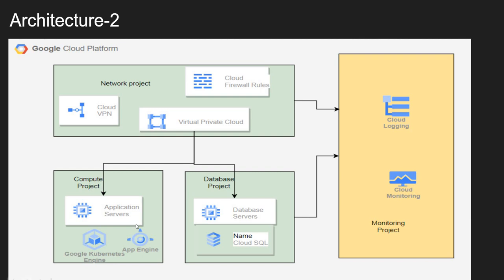Then I am creating one more project — a compute project — where I create all compute resources like my application servers, my GKE, or my App Engine, and I am sharing the VPC created in the network project. I am not creating any VPC in my compute project; I am just using the VPC from the network project because that is a shared VPC, shared across multiple service projects. Similarly for database, I create a separate project for database with VMs, Spanner, or Cloud SQL instances, and one separate project for monitoring. All these projects send logs through the log router for logging and monitoring into this separate monitoring project.